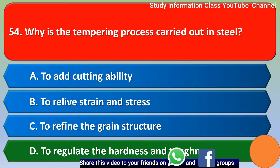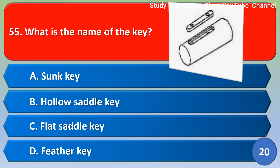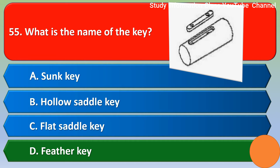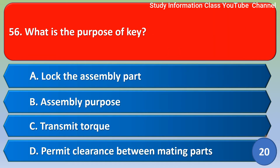Next question: What is the name of the key? Option A: sunk key. Option B: olive saddle key. Option C: flat saddle key. Option D: feather key. The correct answer is Option D: feather key.